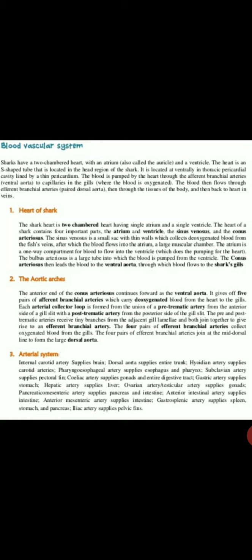The shark heart is a two-chambered heart having single atrium and ventricle. The heart of shark contains four important parts: atrium, ventricle, sinus venosus, and conus arteriosus. The sinus venosus is a small sac which collects the deoxygenated blood from the fish veins, after which the blood flows into the atrium. The atrium is a large muscular chamber.